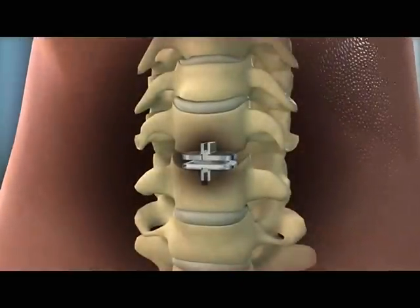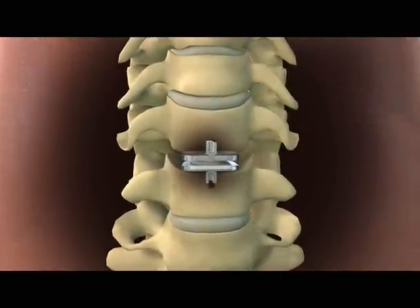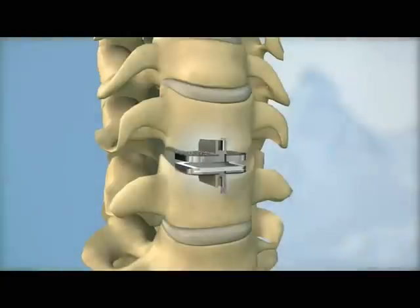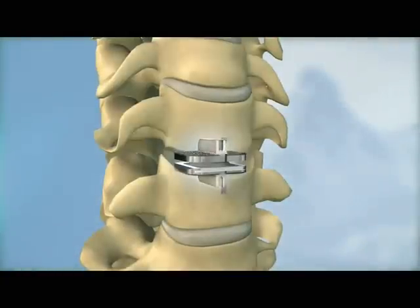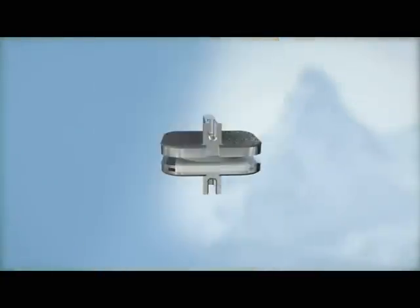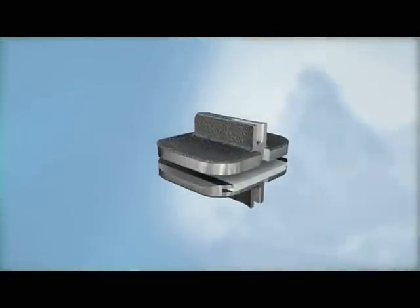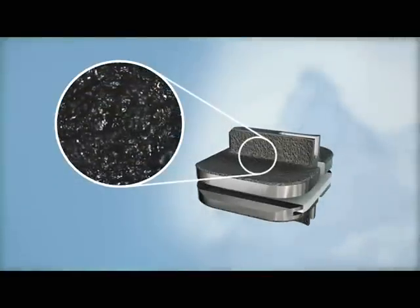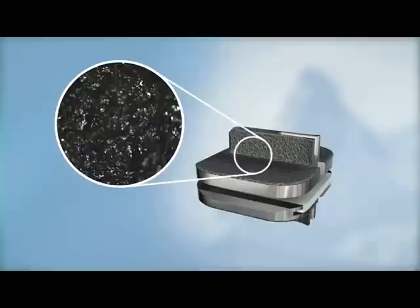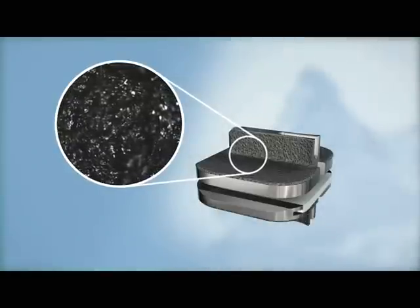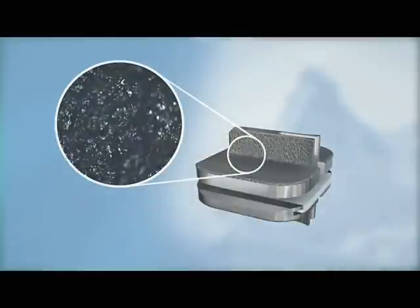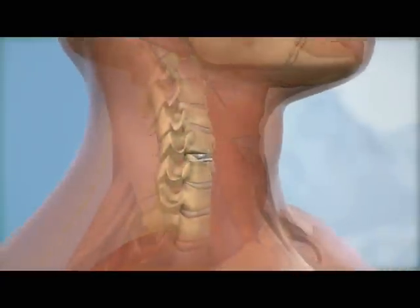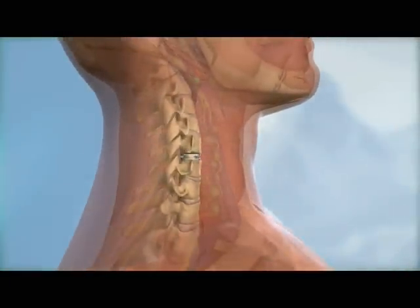The ProDisc-C implant is secured to the vertebral bodies above and below the disc space and held in place with two central keels. All bone contacting surfaces of the ProDisc-C implant have a plasma sprayed titanium coating to promote bony ongrowth, providing long-term implant stability. The ProDisc-C is a zero-profile implant that does not contact soft tissue structures after it is implanted.